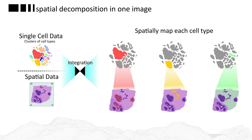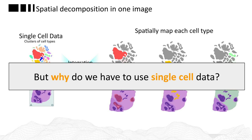The basic idea here is that you take single cell data and spatial transcriptomics data, you combine or integrate them in order to be able to spatially map each cell type found in the single cell data down onto your spatial data. You might ask why you have to use single cell data when we have the spatial data — can't we just look at how certain marker genes are distributed within our spatial data?